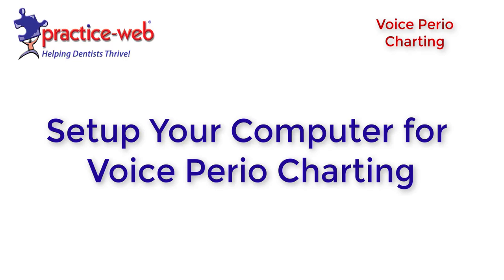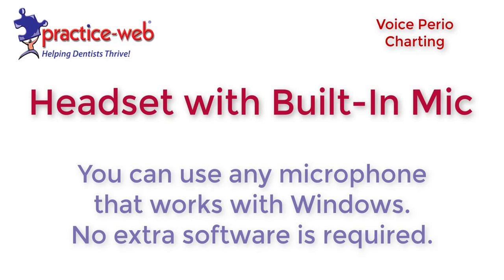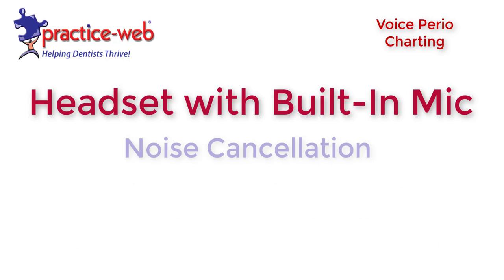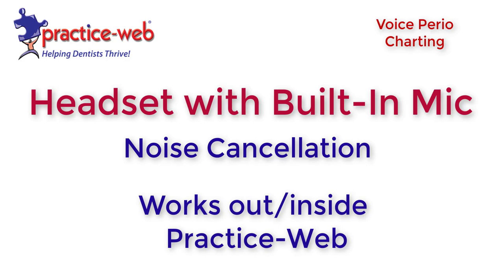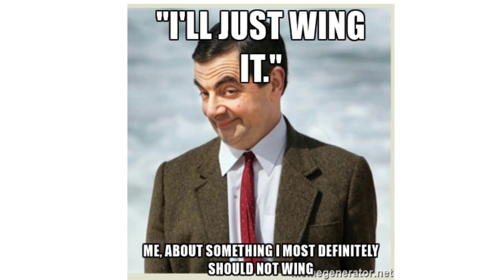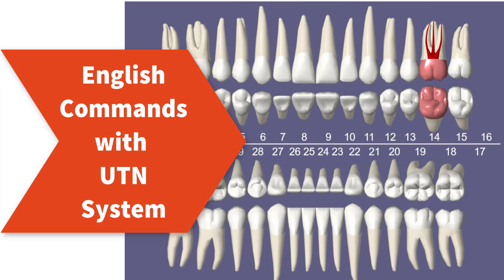The voice perio charting feature is easy to set up. All you need is a device-compatible headset with a built-in mic. You should consider good noise cancellation to filter out background noise, and that the headset can work outside and inside PracticeWeb. Make sure to test the voice perio charting feature before seeing patients. Also note that the feature responds to English voice commands using the universal tooth numbering system.